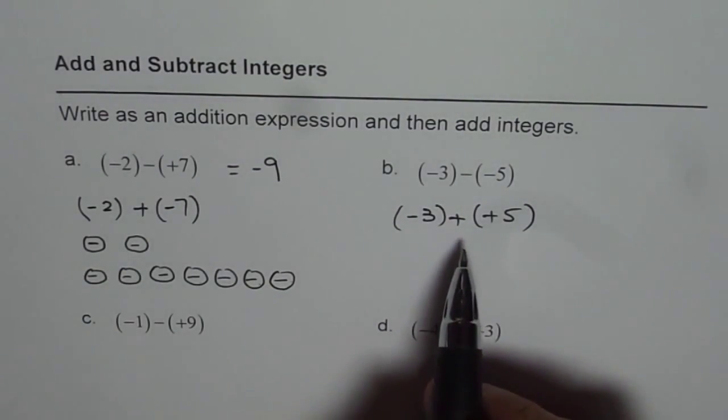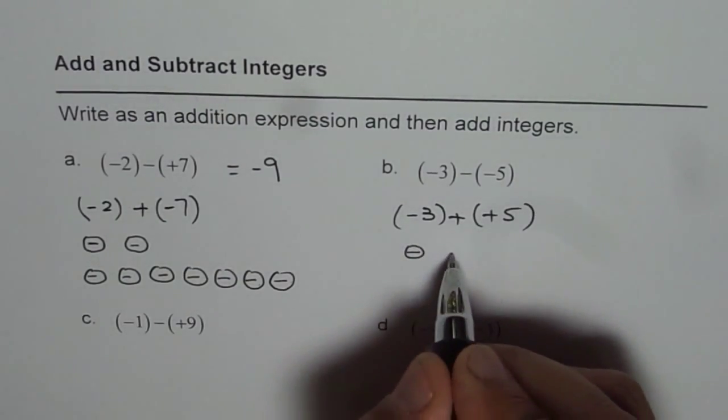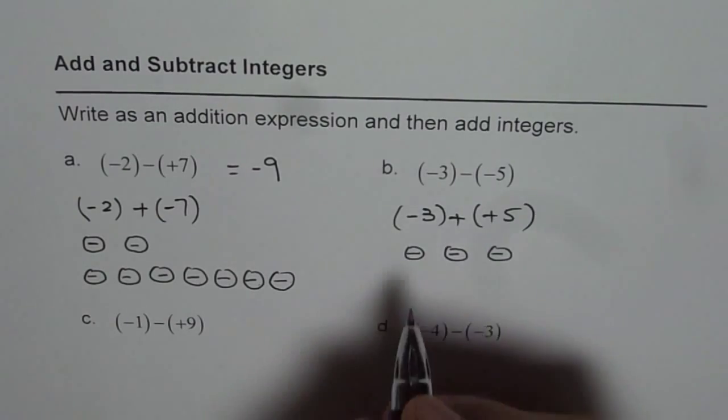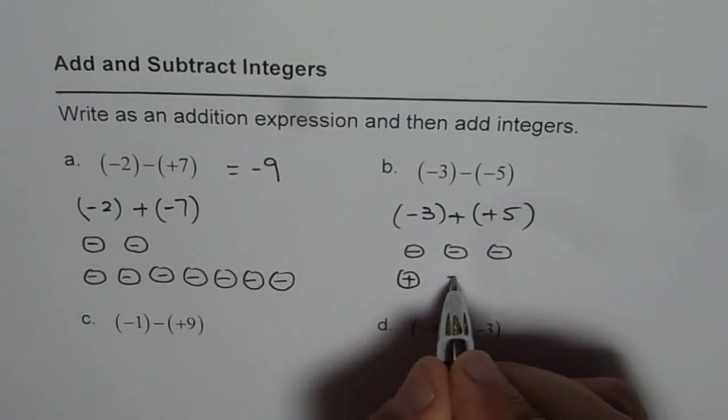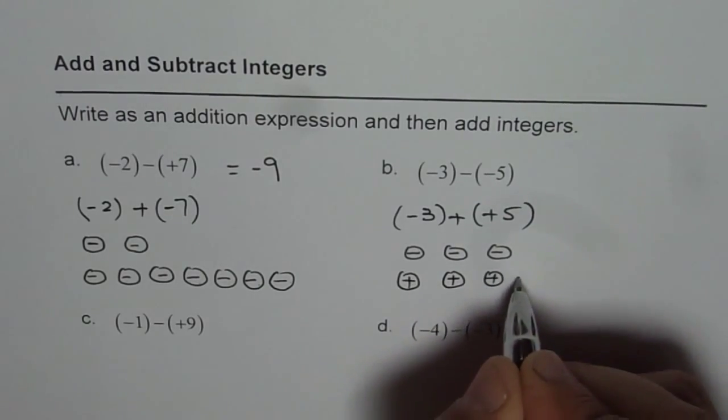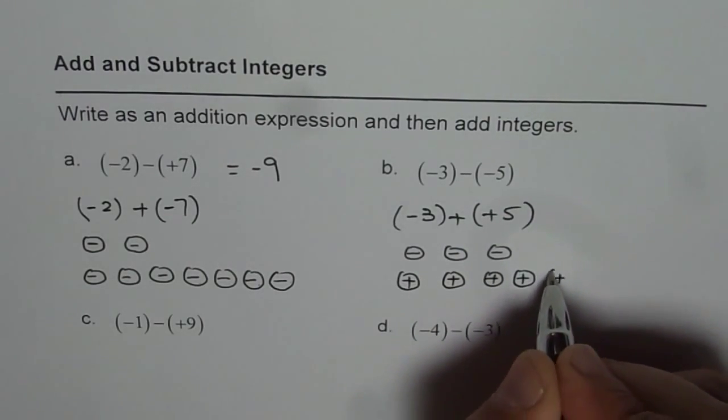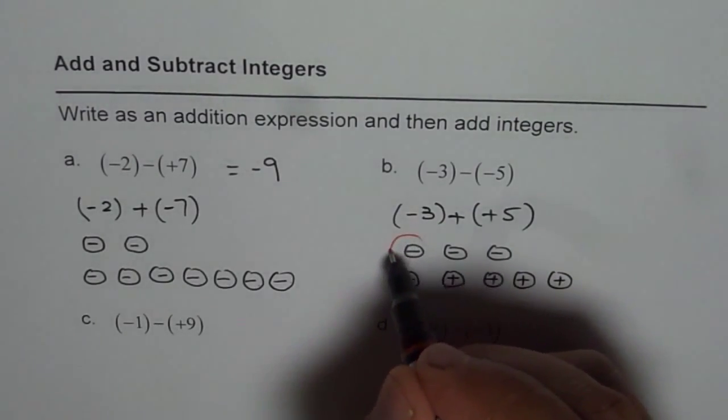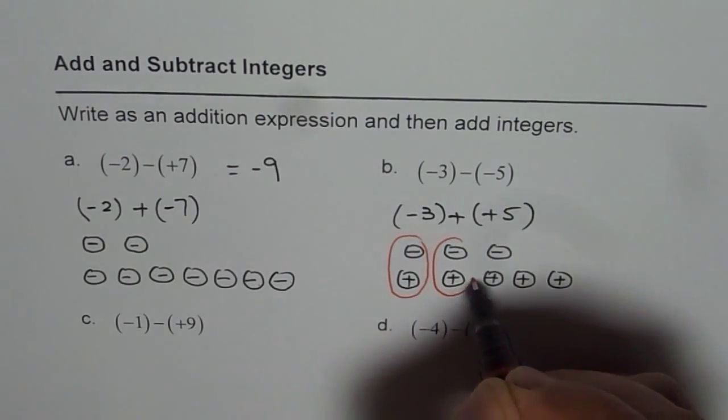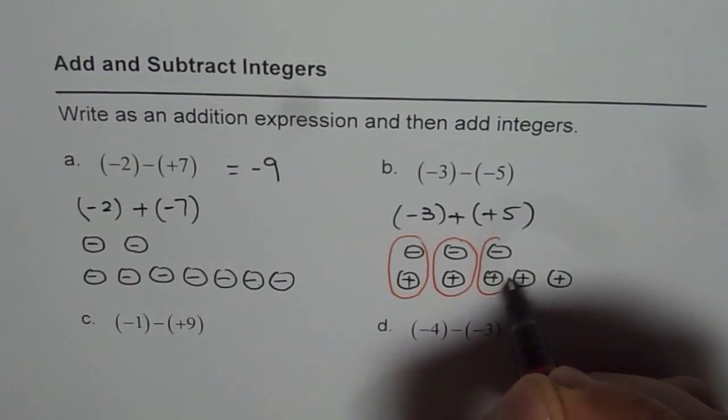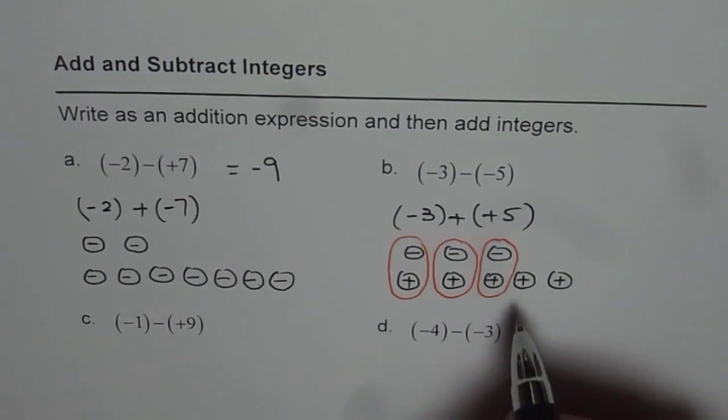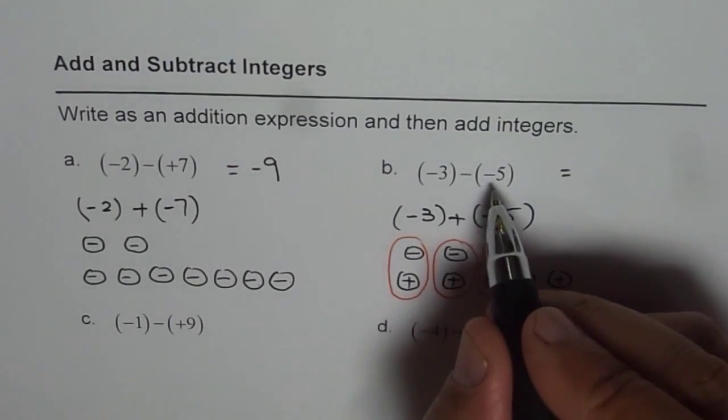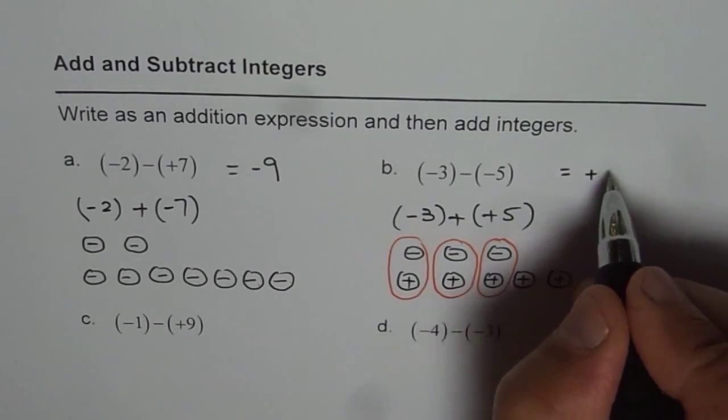Now in this case, I have three negative counters, one, two, and three plus five positive counters. So let me write them here. One, two, three, four, and five. As you can see, we can now form sets of negative and positive, which become zero. So these are my zeros. These are my zeros. What am I left with? Two positive counters. And therefore, minus three minus of minus five is positive two.